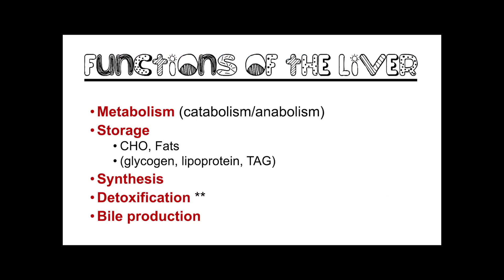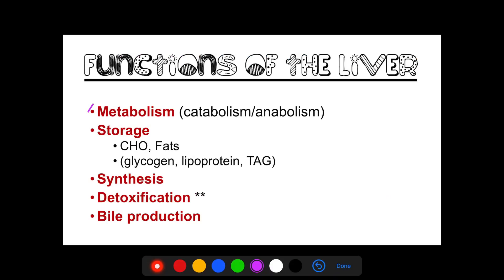For the functions of the liver, we have first metabolism. The liver is capable of metabolizing proteins, carbohydrates, and fats, and also their storage. For storage, we have carbohydrates such as glycogen, and proteins such as lipoproteins — these are types of proteins that carry lipids. Your liver also stores fats and triglycerides.